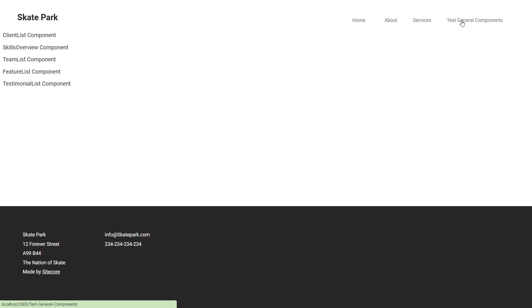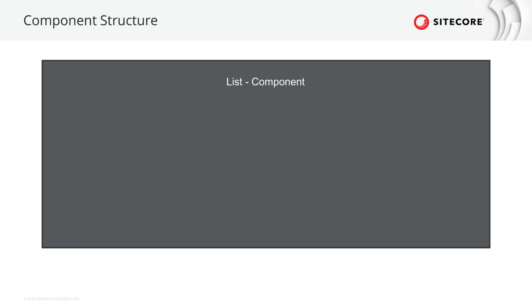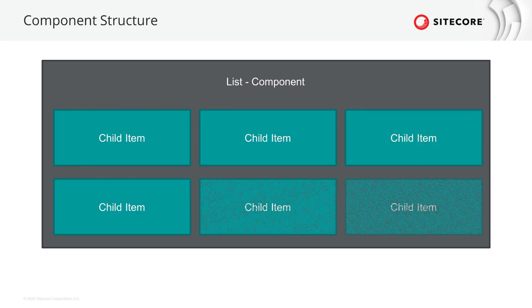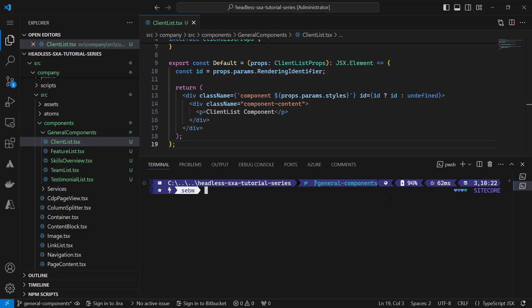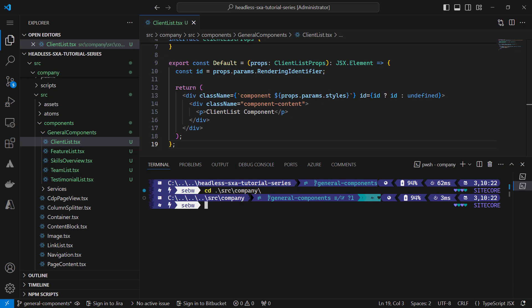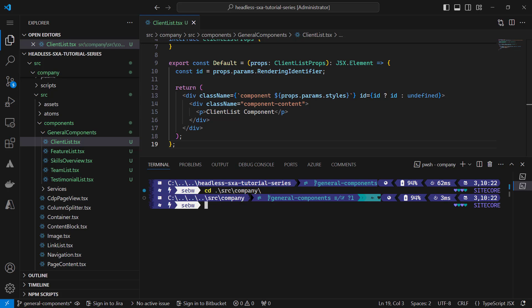Before we start coding the components, let's have a look at how they are structured. All components will consist of one part that represents the parent, meaning the list component. This is what authors will choose to add these components to the page. In addition to that we will have to create a component that represents the child item of the list. That simplifies maintainability later. As these components are just UI components and not meant for usage in pages, we create those under the atoms folder so they don't get indexed by JSS.